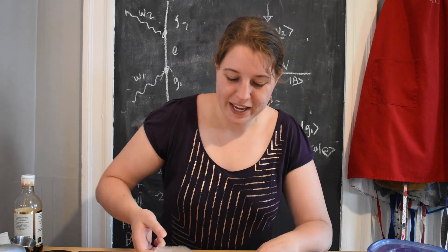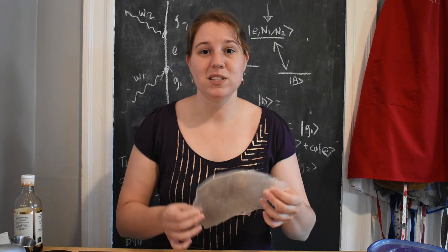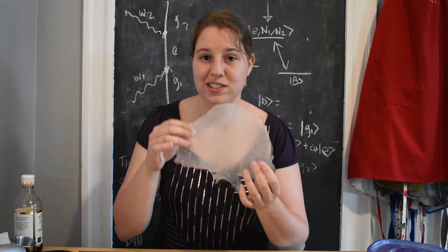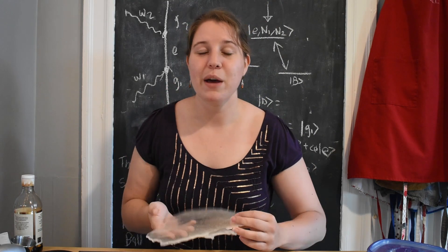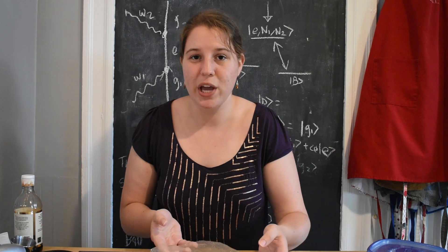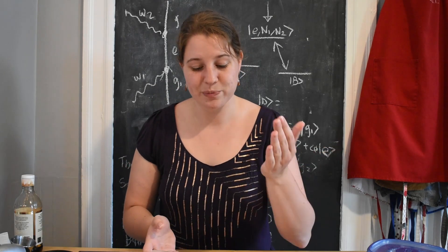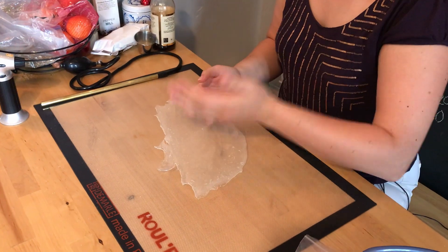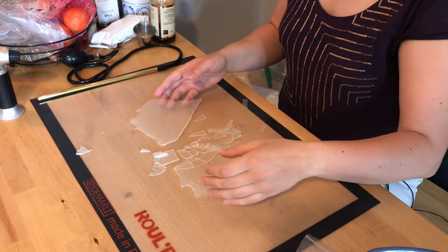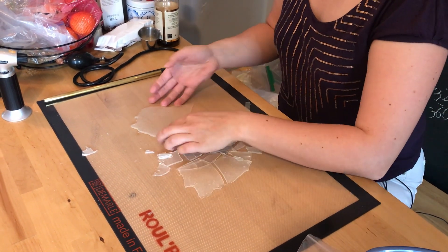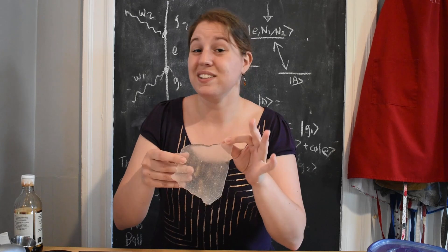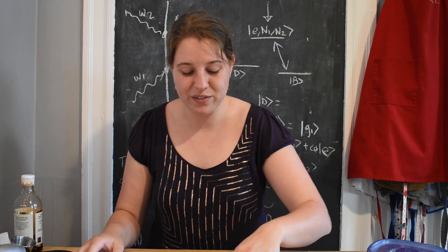So you see we have some isomalt that I've melted and poured out onto our work surface here. It looks just like a sheet of sugar glass and what we're going to do is shatter it right here with our hands. And you can see that the result is that this actually breaks a lot like you expect any other kind of glass to break.